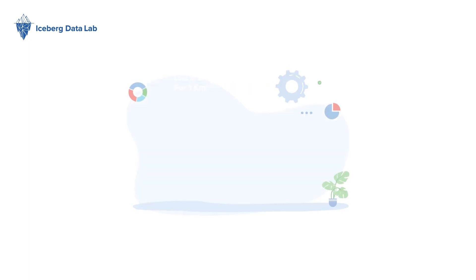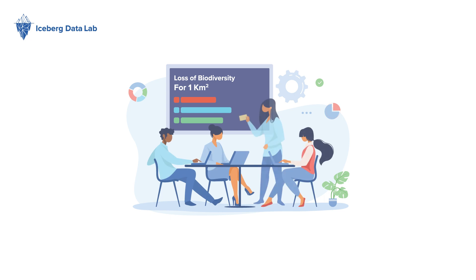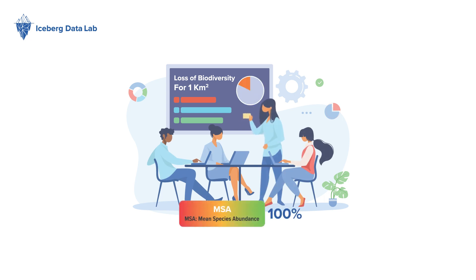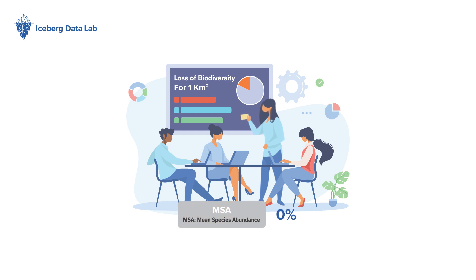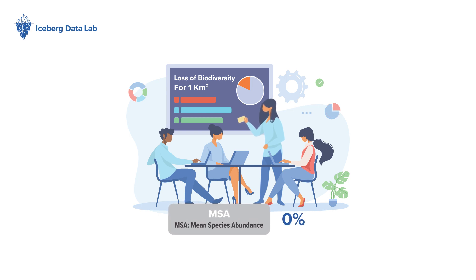What we deliver as the result of the CBF is the amount of square kilometers for which the company has lowered the MSA to 0%. As such, a company with an absolute impact on biodiversity of negative 100 square kilometer MSA means that this company, for the year of analysis, has brought the MSA from 100% to 0% for 100 square kilometers.